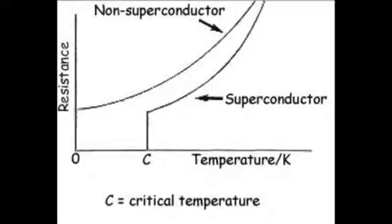Superconductivity was originally just thought of as ideal perfect conductivity in which no resistance is exhibited. While superconductors do exhibit the property of having no resistance, differences can be seen between a superconductor and predicted perfect conductivity by how resistance changes with temperature. As you can see in this image, rather than resistance going to zero as would be linearly predicted, at a certain superconducting temperature, resistance suddenly drops off to zero from a value well above that.